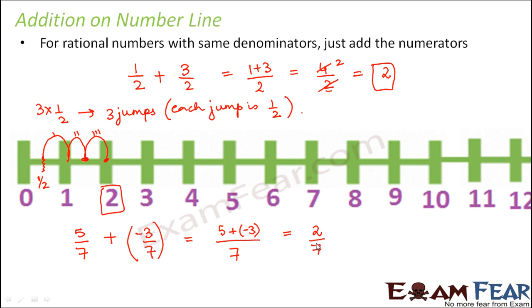Now you might ask yourself why it is 2 by 7 and why not 8 by 7? Let us have a look at this on the number line. 5 by 7 would be somewhere between 0 and 1, somewhere here. Now we are trying to add minus 3 by 7 to 5 by 7. Since we are adding a negative number, this time we will jump towards the left.